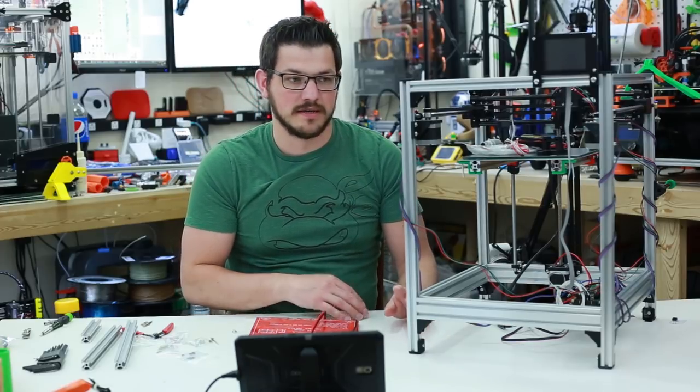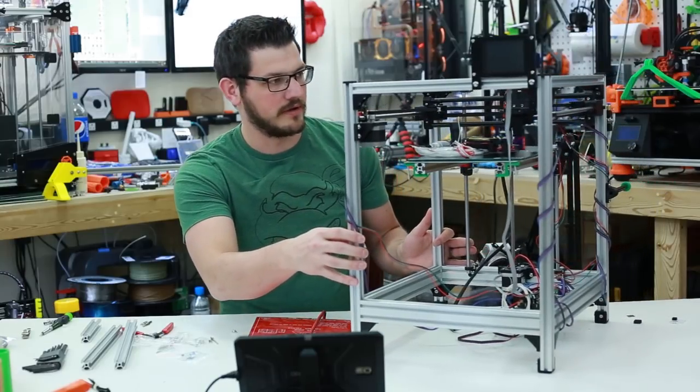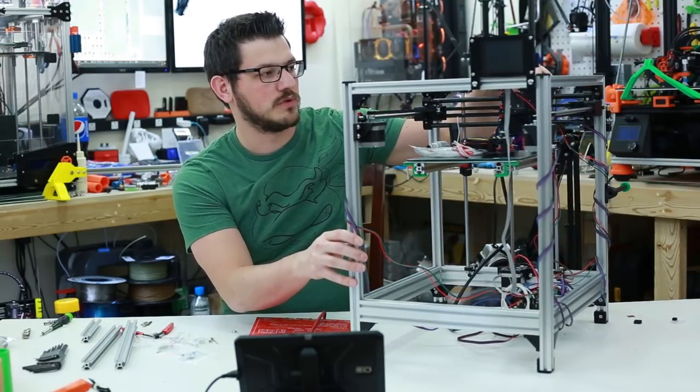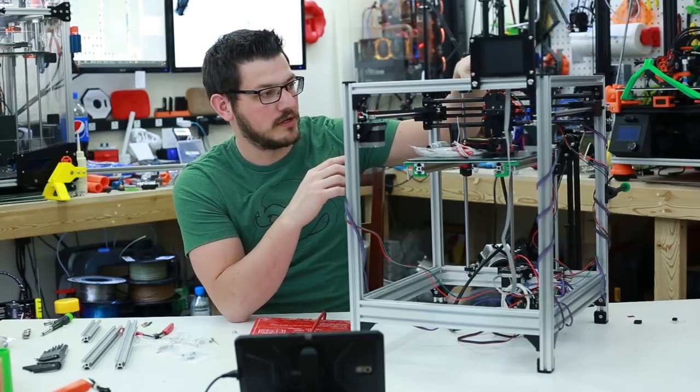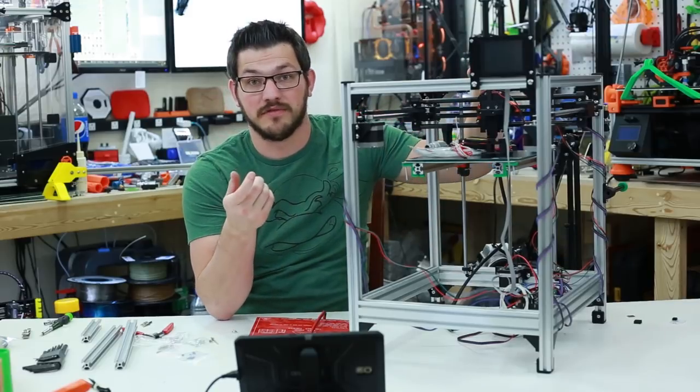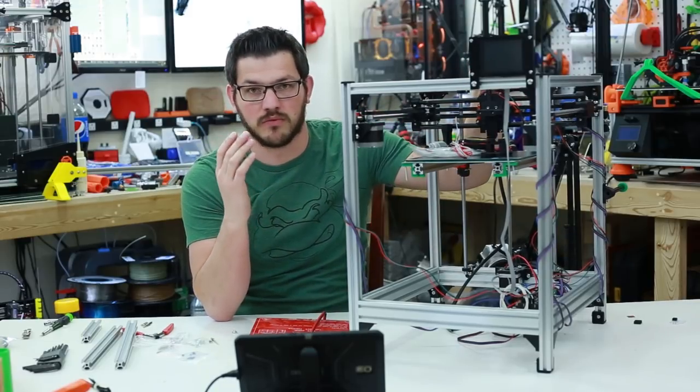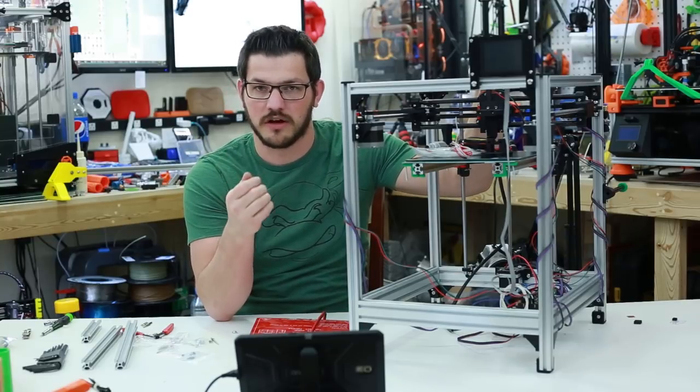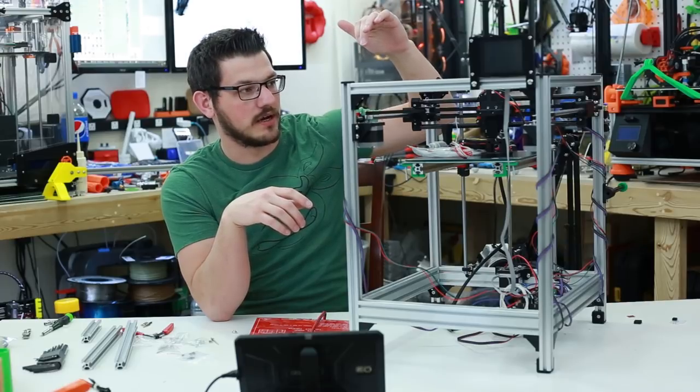So the very first thing I'm going to talk to you about is, it looks a little bit different than when you guys last saw it. So I ended up switching out the actual carriage for Arthur's carriage because it had the captive nuts built into the model where Tech2C's did not and that's a really big thing to have. You can lock things down so much easier having captive nut holes.